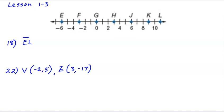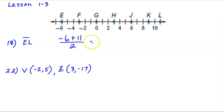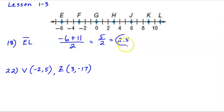Number 18: we're supposed to use the number line to find the coordinate of the midpoint of segment EL. Point E has a coordinate of negative 6 and L has a coordinate of 11. The midpoint is found by taking those two numbers — negative 6 plus 11 — and then dividing by 2. Negative 6 plus 11 is 5, divided by 2 is 2.5. So the coordinate of the midpoint of segment EL is 2.5.